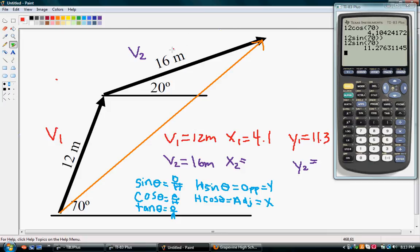Alright, next we need to find the x and y components of V2. So, what we found here is our x. This is our x, our x1. And this isn't the best line ever, but that's our y1.